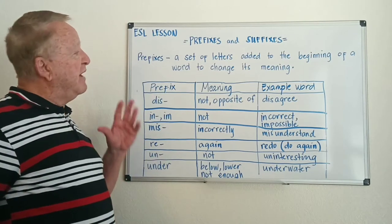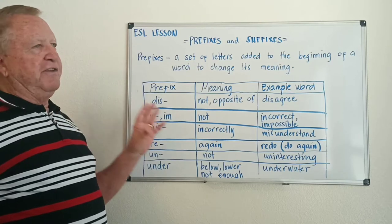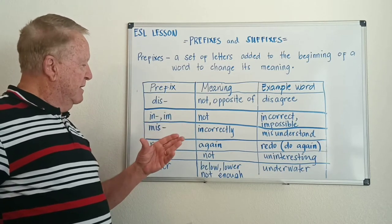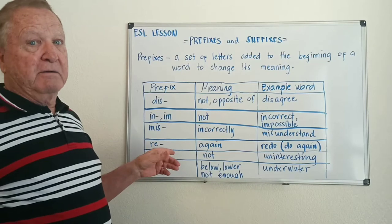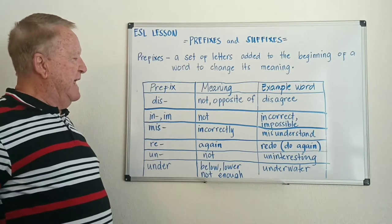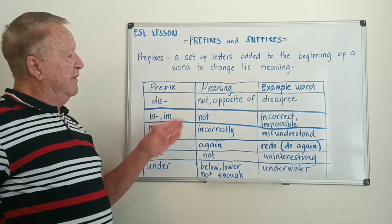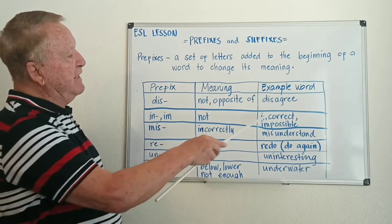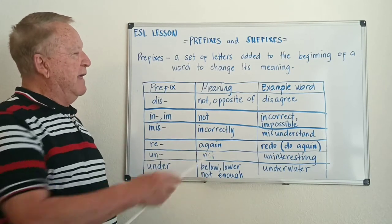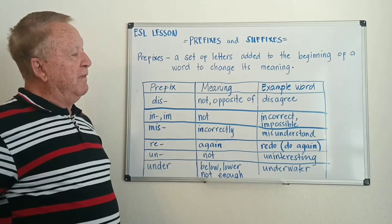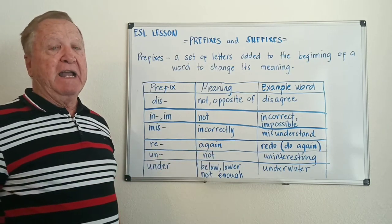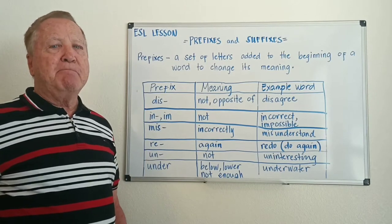Now there are several prefixes that have to do with 'not,' but they're not necessarily interchangeable. Sometimes you'll use 'in,' 'dis,' 'im,' or 'un.' Another pair is 'in' and 'im' — added to the beginning of a word, these also mean 'not.' An example is 'incorrect' — the root word is 'correct,' so 'incorrect' means not correct. And 'im' — the root word would be 'possible,' and the prefix 'im' gives us 'impossible,' meaning not possible.